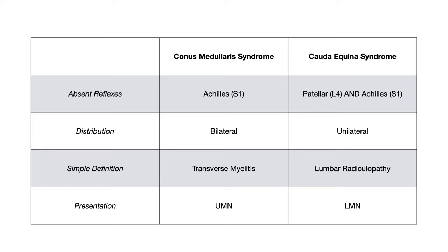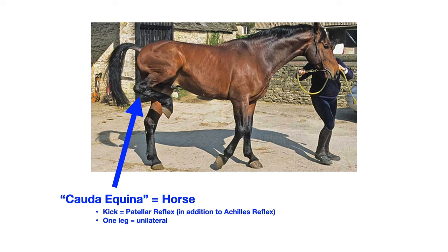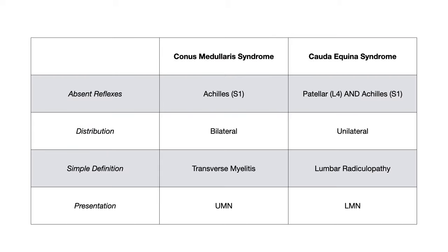Here's the mnemonic: cauda equina means horse's tail, so the mnemonic involves a horse. Notice that the horse is kicking — that kick reminds me of the patellar reflex, because he's using his patella to do that. So in cauda equina syndrome, both the patellar reflex and the Achilles reflex are impacted. The other detail: it's one leg kicking, so it's unilateral — which reminds you that cauda equina syndrome has unilateral findings, compared to conus medullaris, which has bilateral findings.